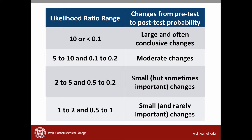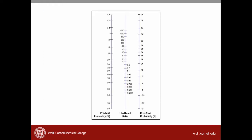We can do a more precise estimate of post-test probability using a nomogram, which is a tool that helps us do calculations for post-test probability very easily using values for pretest probability and likelihood ratio. This is an example of a nomogram. It's a simple way to see how a test, based on its likelihood ratio, takes a pretest probability and changes it to a post-test probability.